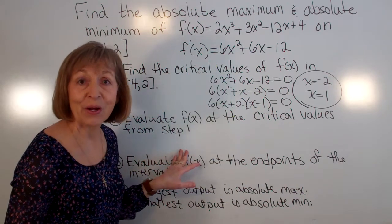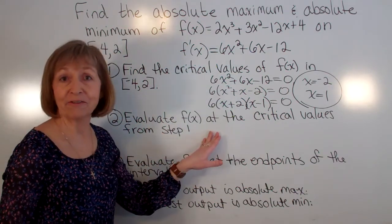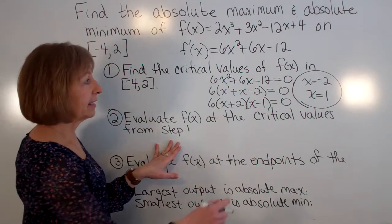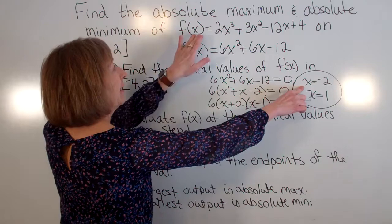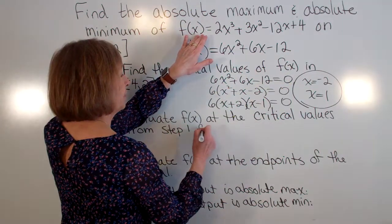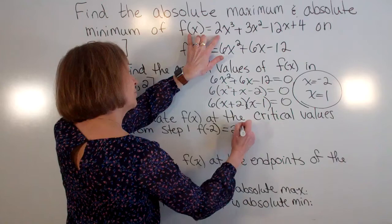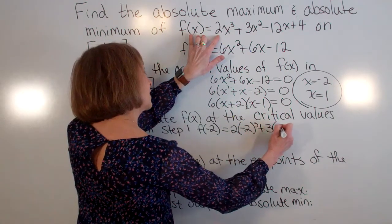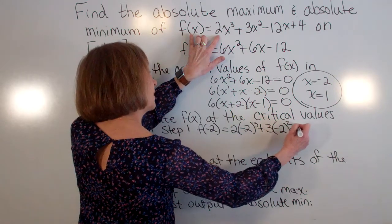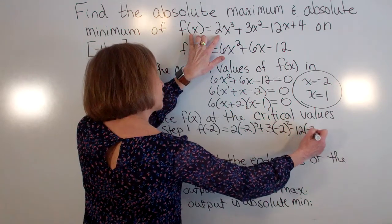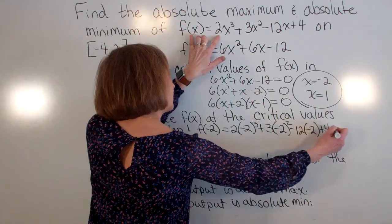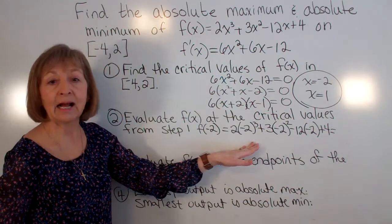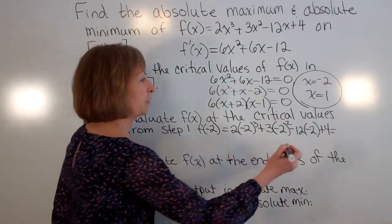Step 2, now we want to evaluate the function at the critical values from step 1. So I'm going to find f(-2). So that's 2(-2)³ + 3(-2)² - 12(-2) + 4. And when you go through and calculate that out, f(-2) = 24.